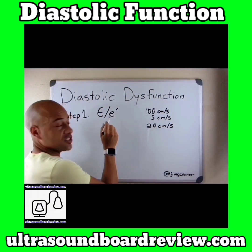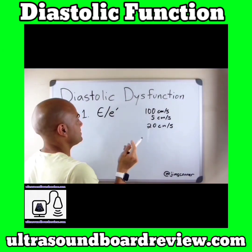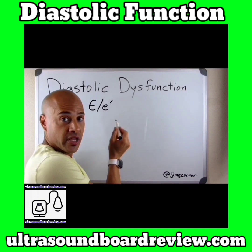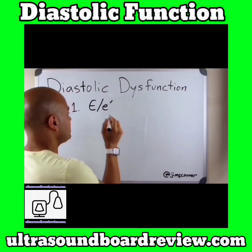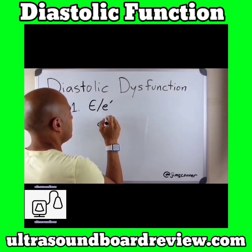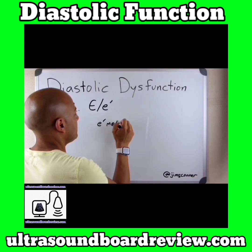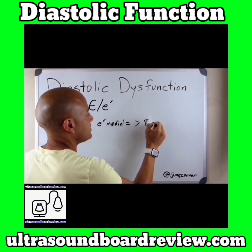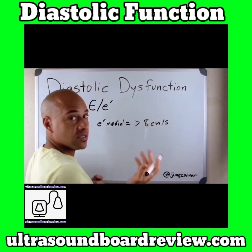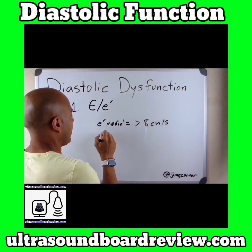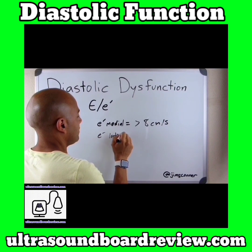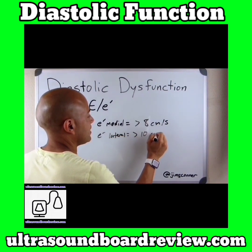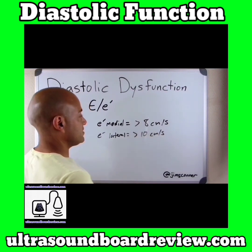The normal range for the E to E prime ratio is less than 14. The normal values for your E prime on the medial annulus — anything greater than 8 centimeters per second is normal. And for the lateral annulus, anything greater than 10 centimeters per second is normal.